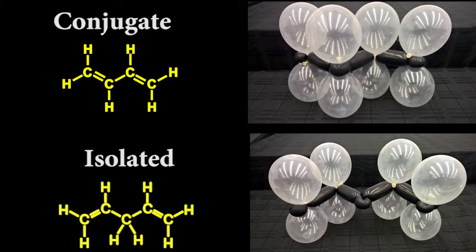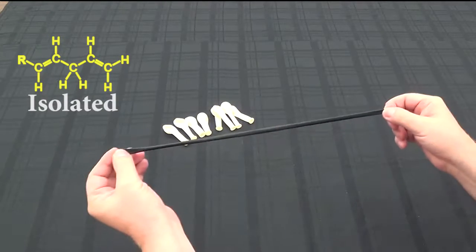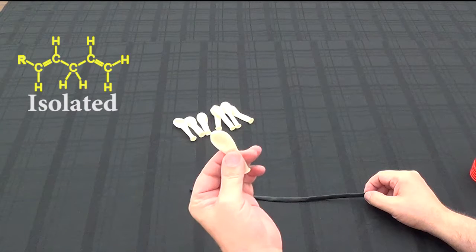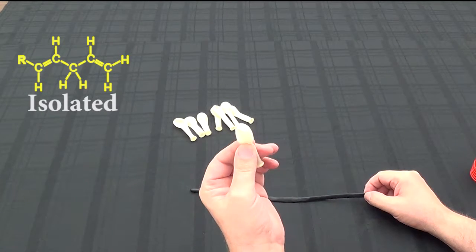What we're going to do is take the black 260 balloon, that's going to be our carbon backbone. We're going to take eight five-inch clear balloons that represent the orbitals of the pi bond overlapping.